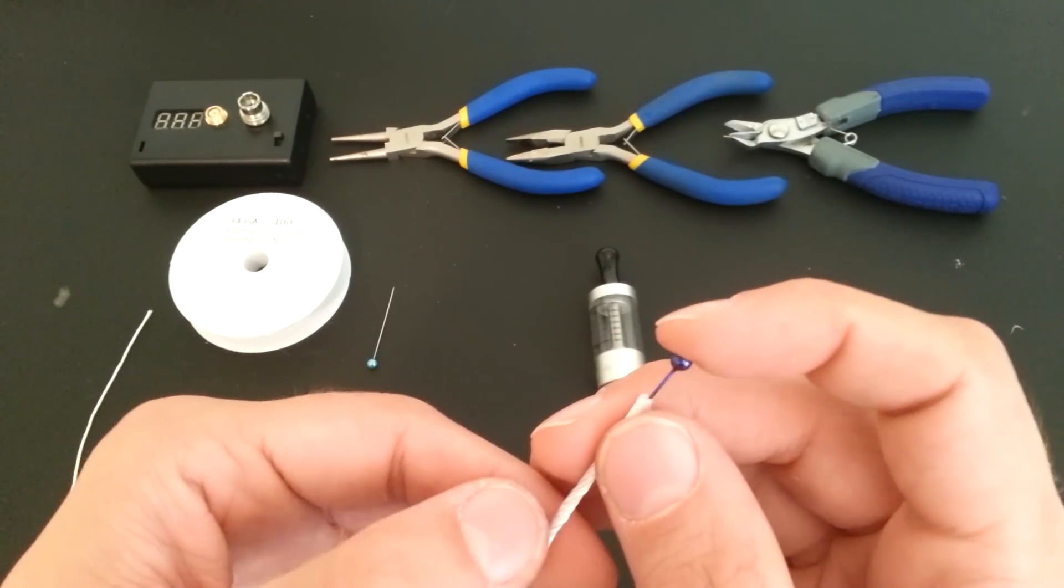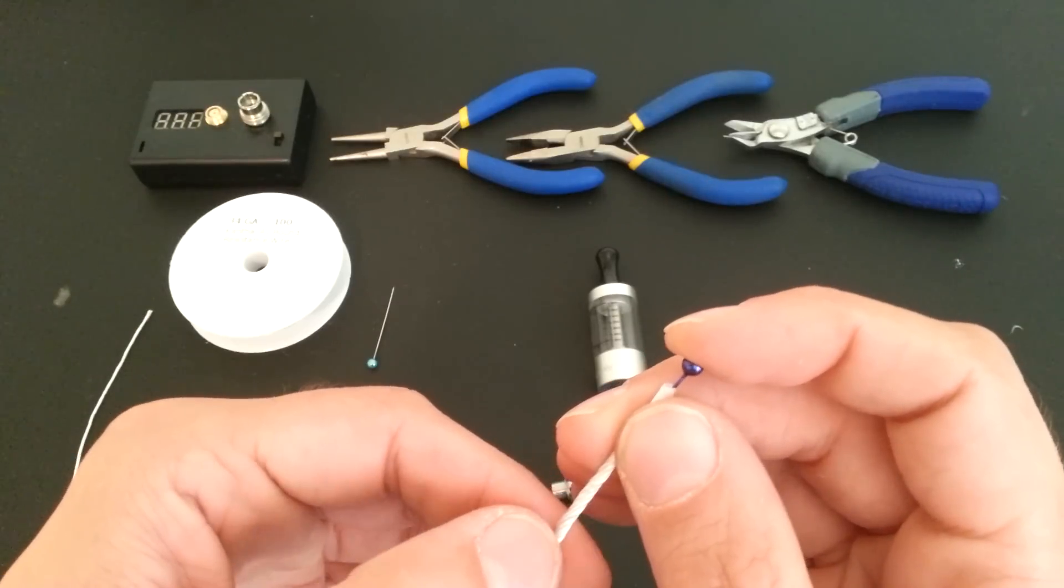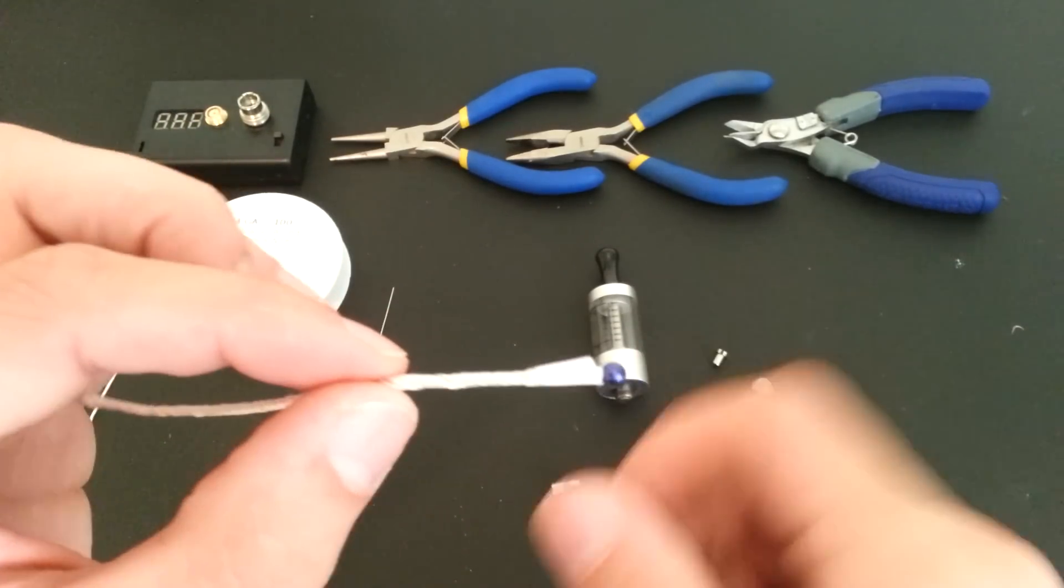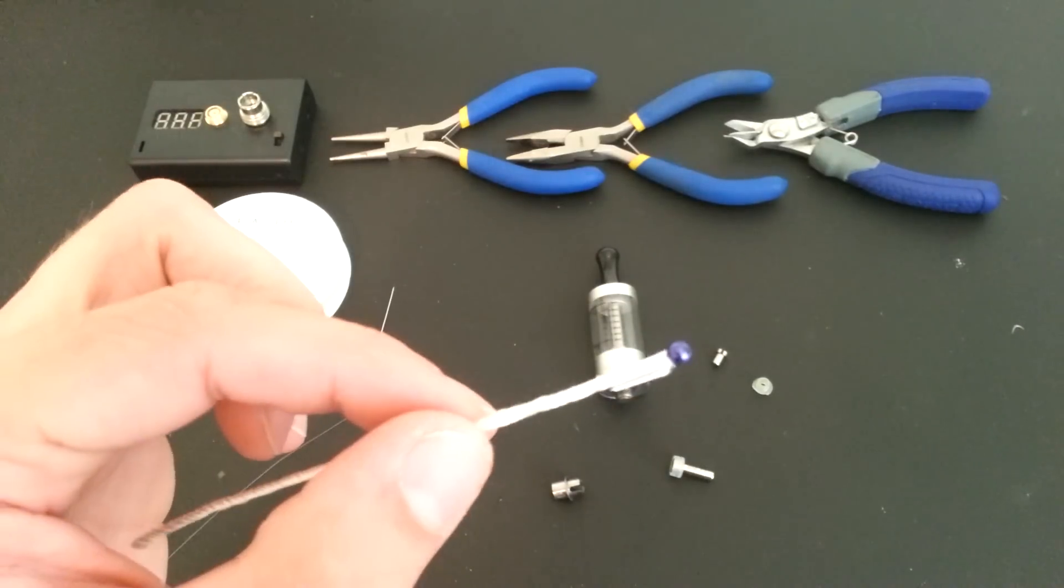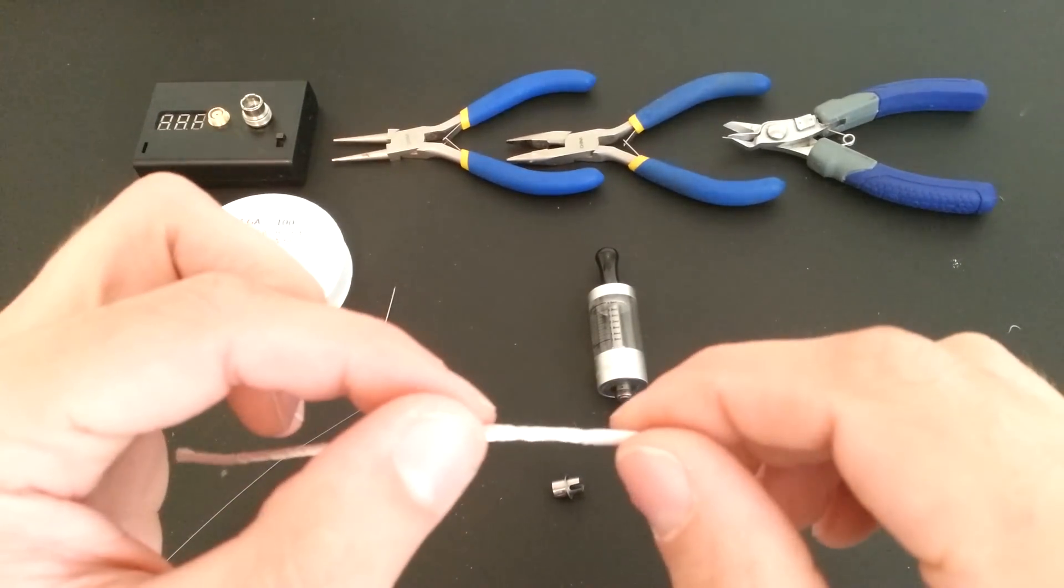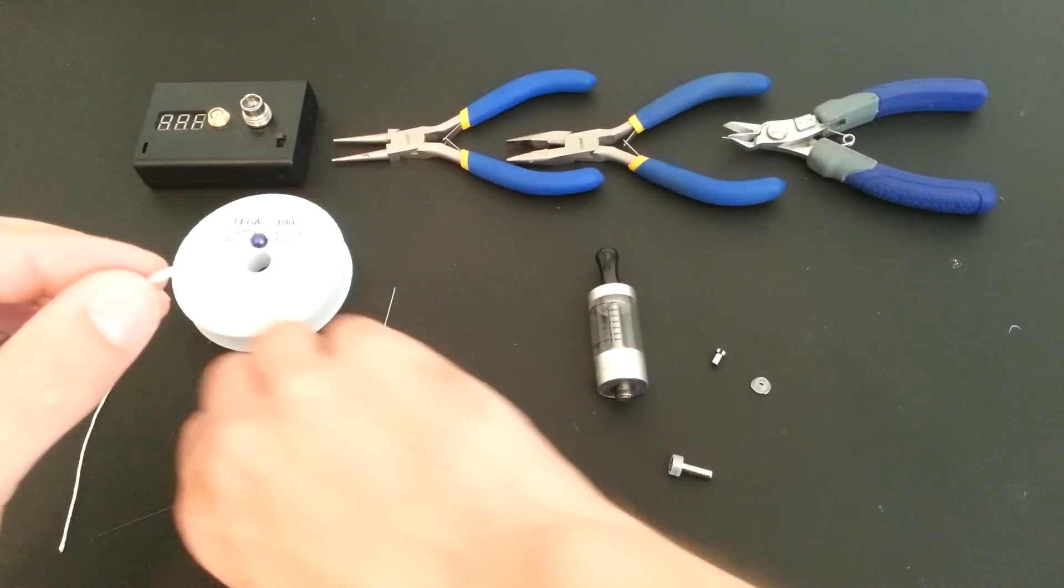But the tape on the end of the wick helps stabilize the wick, keeps it from fraying, and gives you a really good base to start with. And you should end up with something like that. Should make it a lot easier to coil, and you'll get a nice clean coil around it.